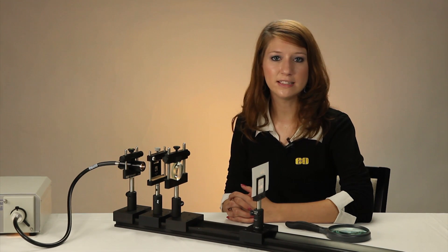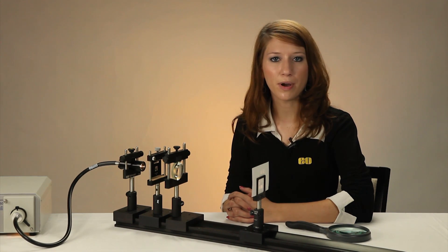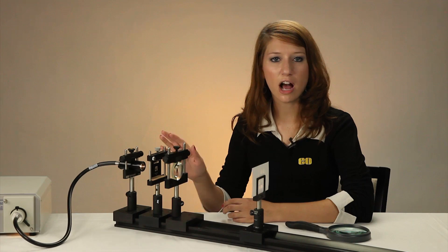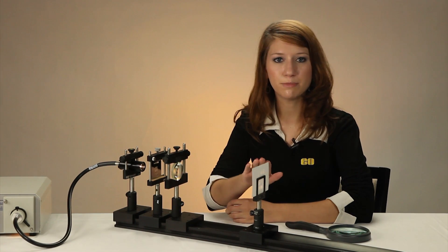A common misconception is that magnification is a property of the lens itself, when in reality it's a result of how the system is laid out. To illustrate this point, we've set up a simple imaging system. Here we have an object, single lens, and image plane.